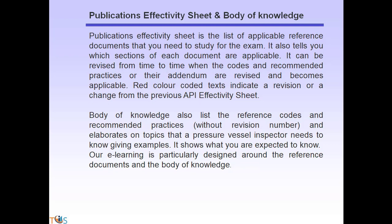The publication effectivity sheet is the list of applicable reference documents you need to study for the exam. It also tells you which sections are applicable and can be revised when codes, recommended practices, or addenda are updated. You need to read not only the publication effectivity sheet but also the correct revision. Red-colored text in the effectivity sheet indicates a revision or change from the previous version. The body of knowledge elaborates on topics the pressure vessel inspector needs to know, giving examples of what you are expected to know. Our e-learning is designed around these reference documents and is revised accordingly.